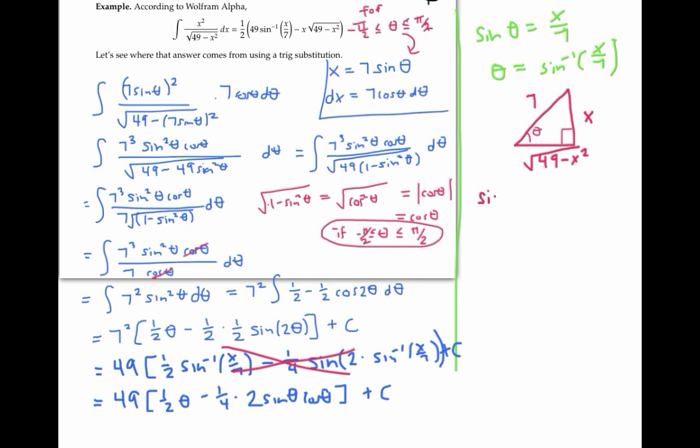Sine of theta is opposite over hypotenuse, so that's x over seven. Well, we already knew that. But now cosine of theta is adjacent over hypotenuse, so that's the square root of 49 minus x squared over seven.